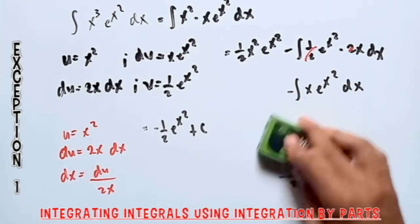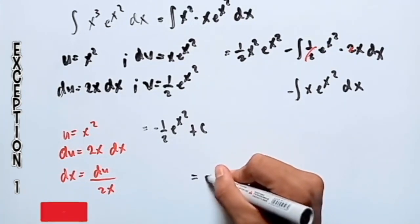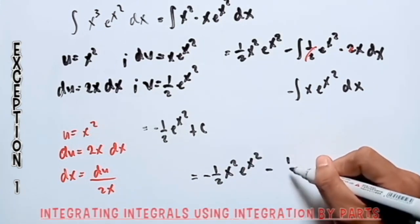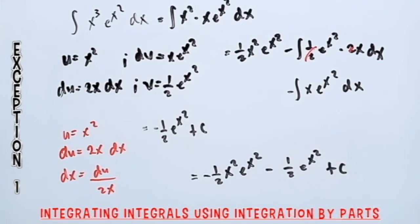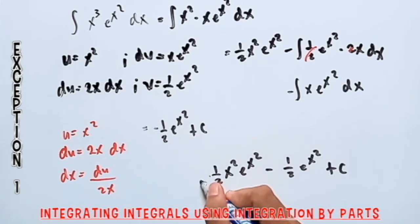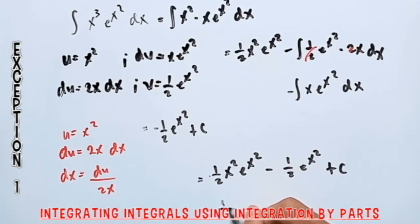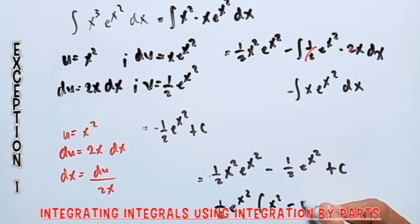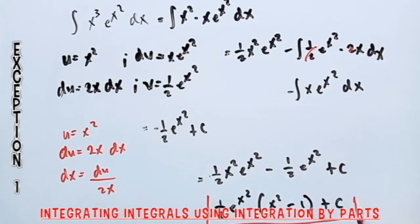Therefore, our final answer is equal to one-half x squared e raised to x squared minus one-half e raised to x squared plus c. We can simplify this by factoring out one-half e raised to x squared times the quantity x squared minus 1, plus c. Hence, this is our final answer.